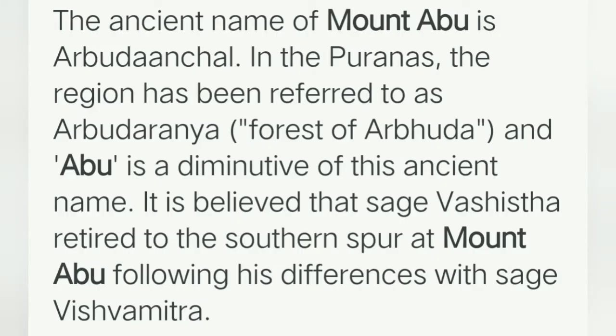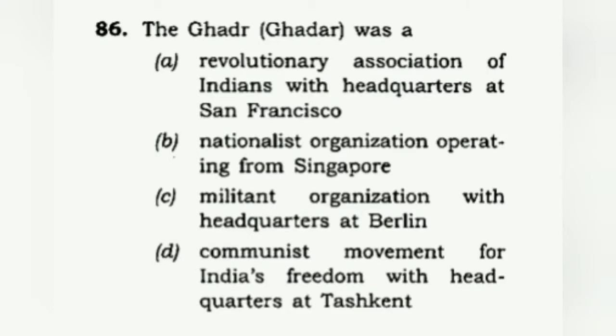With reference to Indian history of art and culture, we have famous works of sculptures and sites and need to check whether they are correctly matched. Ajanta is correctly matched — yes, it has the grand image of Buddha's Mahaparinirvana. Mamallapuram is also correct — it features Arjuna's Penance or Descent of Ganga. So one and three are correct. Mount Abu is not correctly matched with the given option; Mount Abu is associated with Sage Vashishtha. The correct answer is C: one and three only.